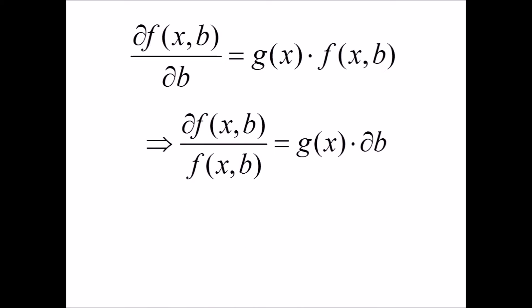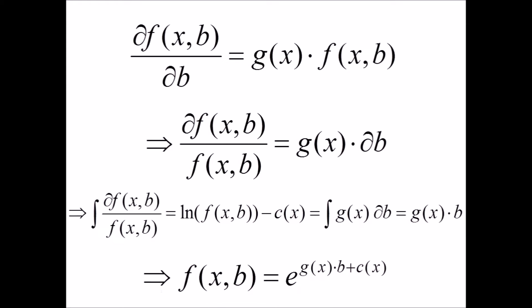We're going to split the partial derivative into differentials and move them to each side, and then take the partial integral of both sides. If we do this, we get the following. Notice that the constant is actually a function of x. Solving for f of x of b, we get that it equals e to the power of g of x times b plus the constant function.